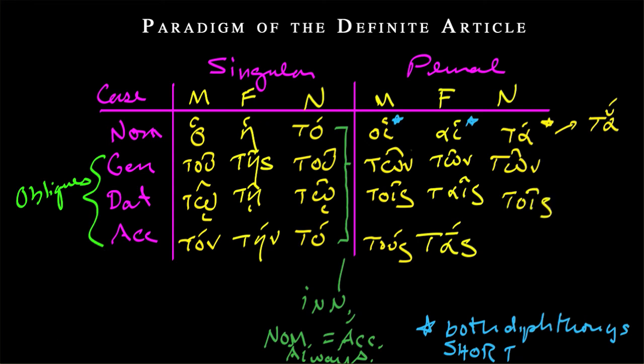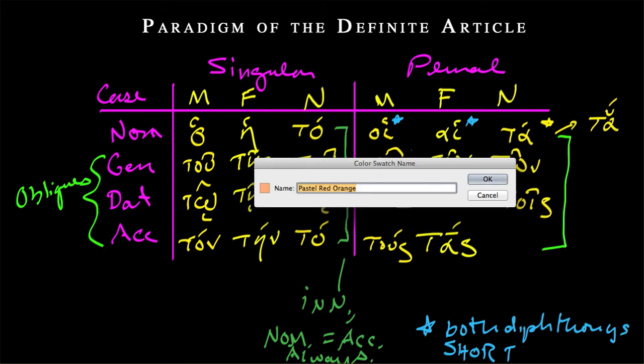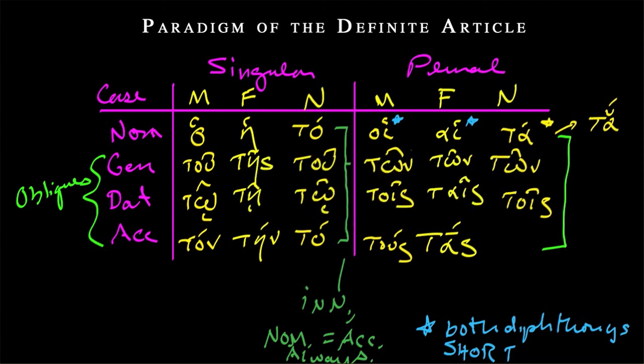But then we can invoke our old rule that we just had over here. Nominative and accusative neuters are the same. Pardon me for that. So ta and again ta, and again both are short.